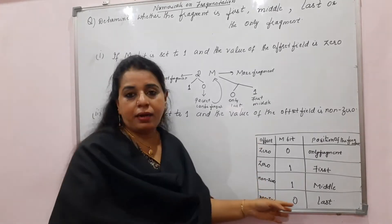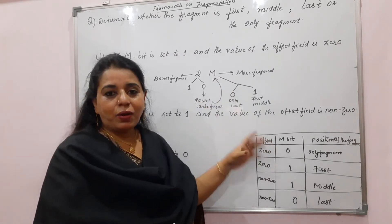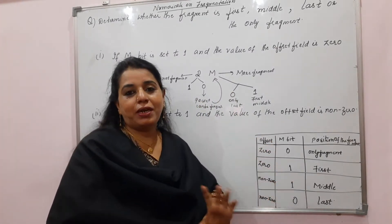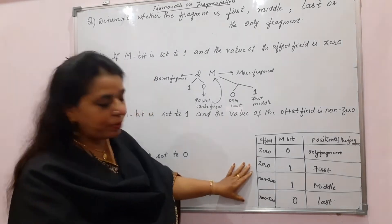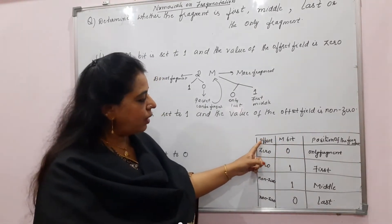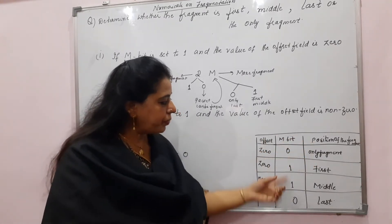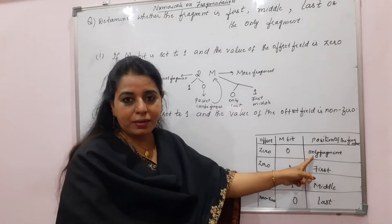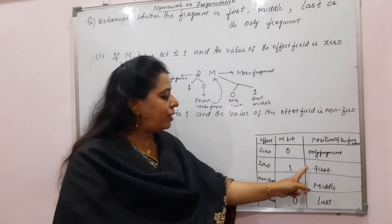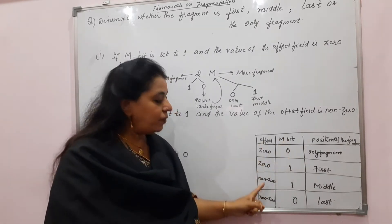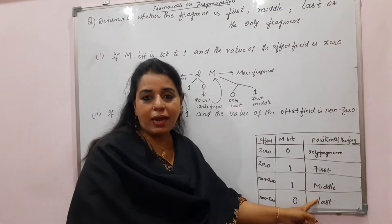You can remember this concept through a table with three column headings: what will be the offset, what will be the M bit, and what will be the position of the fragment. If M bit is 0 and offset value is 0, that is the only fragment — the datagram is not fragmented. If M bit is 1 and offset is 0, it is the first fragment. If M bit is 1 and offset is non-zero, it is the middle fragment. If M bit is 0 and offset is non-zero, it is the last fragment.